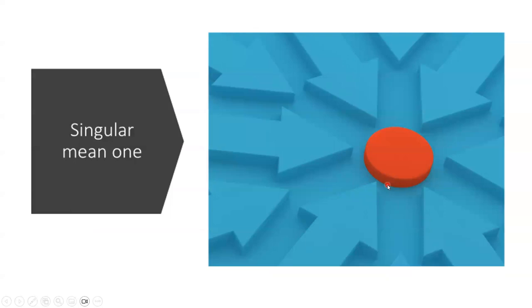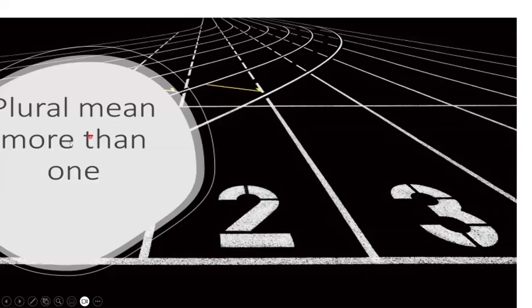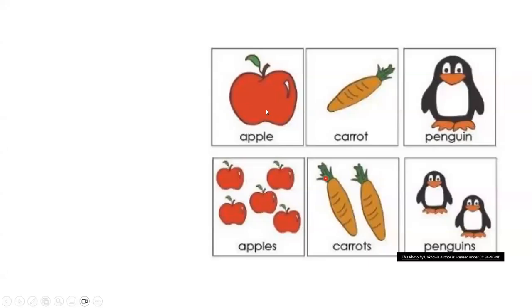What is the meaning of singular and plural? Singular means one thing. And plural means more than one. Two things or three things or something like this. Yes.